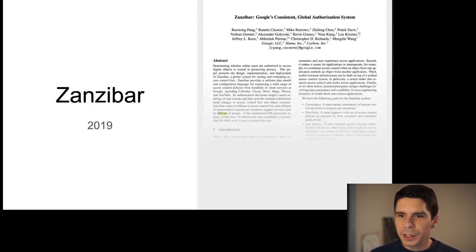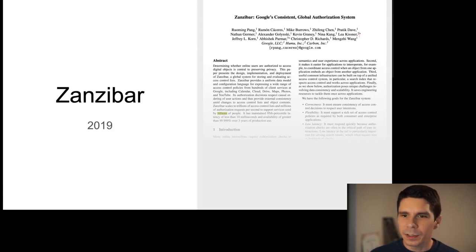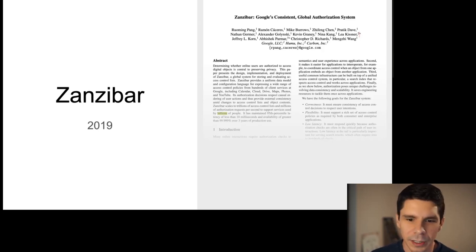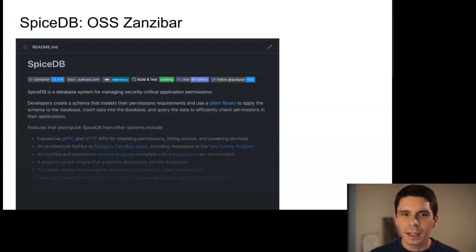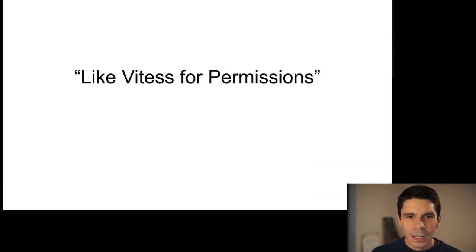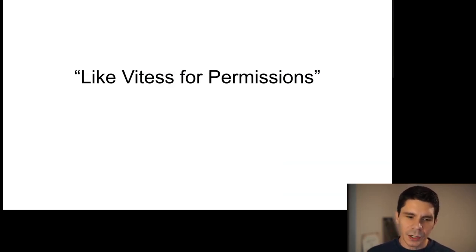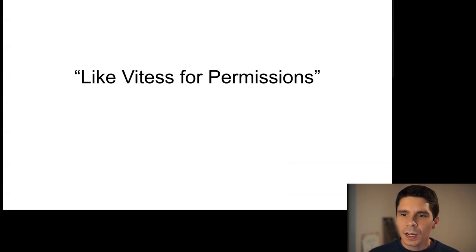Given these requirements, Google set out to write a system called Zanzibar. In 2019 they published a paper laying out a blueprint for building a system that meets those requirements — both at scale and in terms of multi-model complexity. We're building SpiceDB, an open-source implementation of Zanzibar. From a database background, think of it as a layer for permissions that gives you a rich data model on top and makes it efficient to access the underlying data store.